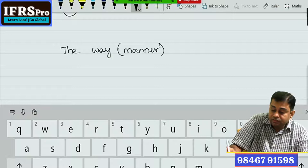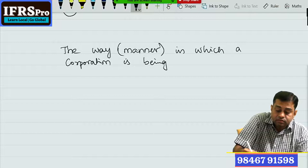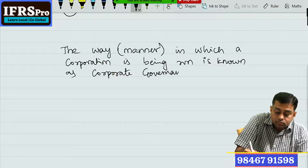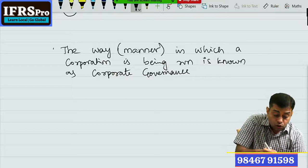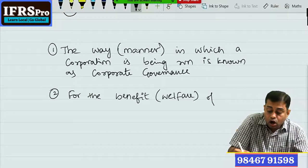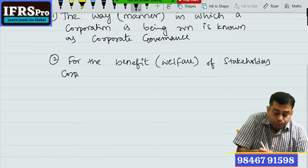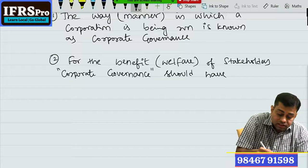The way or manner in which a corporation is being run is known as corporate governance. To protect the welfare of stakeholders, corporate governance should have certain principles.